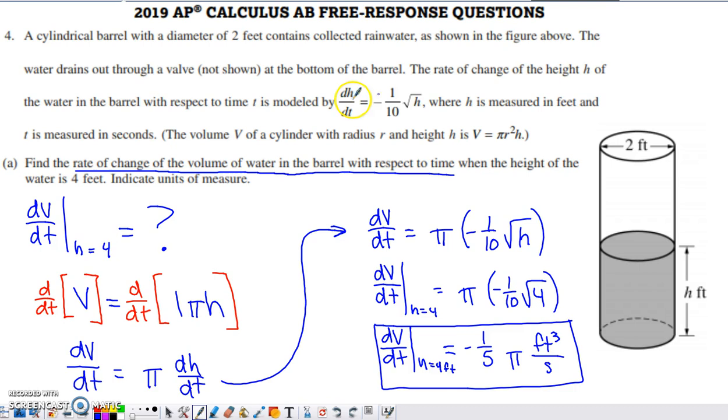The problem statement tells us that the rate of change of the height of the water in the barrel, dh/dt, is equal to negative one-tenth square root of h. They give us some units as well: h is measured in feet, t is measured in seconds. They provide us with the volume formula for the cylinder.